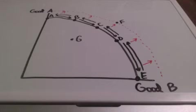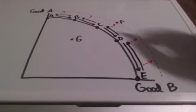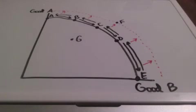If we take a look at point G, point G is telling us that we are not utilizing the resources that we currently have, because we are inside the production possibilities curve.